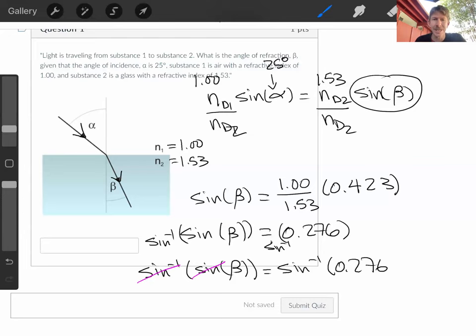The sine to the minus 1 and the sine cancel out, just leaving beta, which means all we have to do is plug in 0.276 on the calculator. Then hit shift—I have my shift key up in the upper left—sine, and I get 16.02. So I'm going with 16.0 degrees.